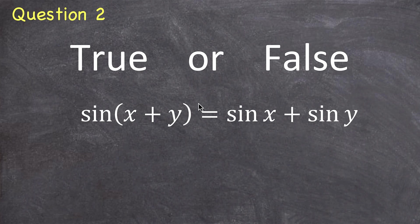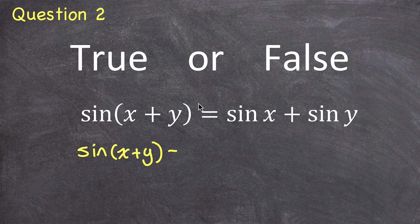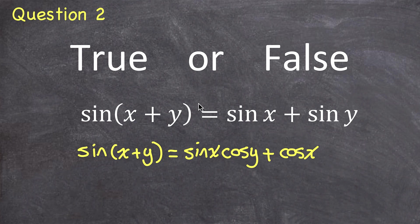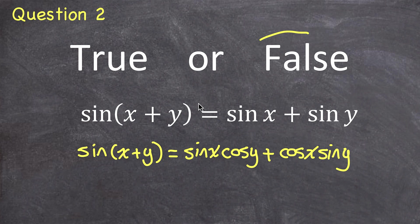Question 2. True or false? Sine of X plus Y is equal to sine X plus sine Y. Hopefully you know you can't distribute sine into its own argument, so this is definitely not true. Sine of (X+Y) is a compound angle identity, and it equals sine X times cos Y plus cos X times sine Y. I have a video with a geometric proof of that. So this statement is false.